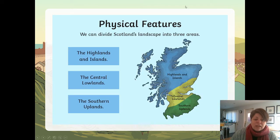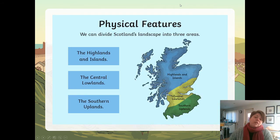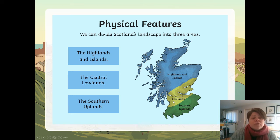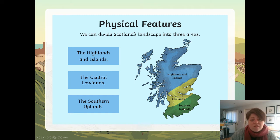We can divide Scotland's landscape into three areas. At the top we have the Highlands and Islands. In the middle we have what's called the Central Lowlands, and in the south we have the Southern Uplands.